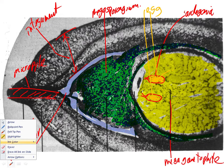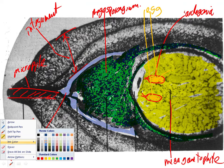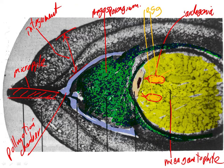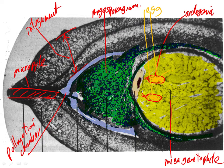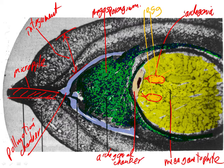Down inside the pollination chamber we have the archegonial chamber — that's the space between the megasporangium and the archegonia. The pollination chamber is a space and the archegonial chamber is a space.